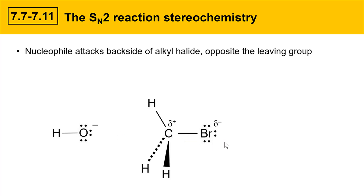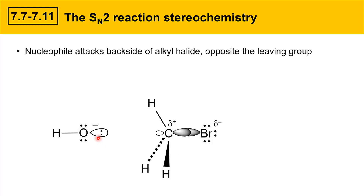There's also a molecular orbital explanation for this. Carbon is sp3 hybridized in an alkyl halide, and it has sp3 hybrid orbitals — shown here. There's the major lobe of the sp3 orbital on carbon making a bond with the bromine leaving group. But sp3 hybrid orbitals also have a minor lobe that sits exactly opposite of where the major lobe is, and this is important for bonding in the SN2 mechanism. The nucleophile — oxygen in this case — has an orbital with electrons that needs to overlap with this minor lobe to make a bond, requiring the nucleophile to come in from the backside of where the leaving group is leaving.